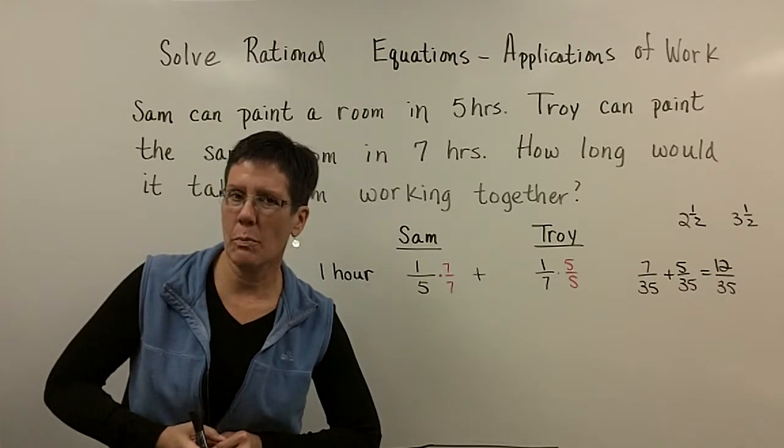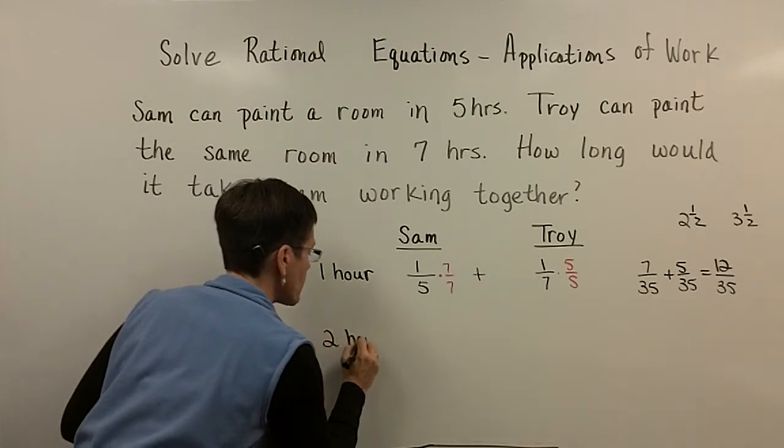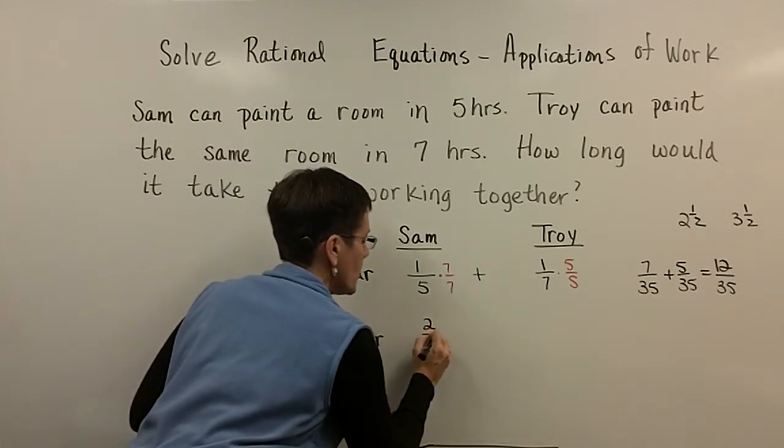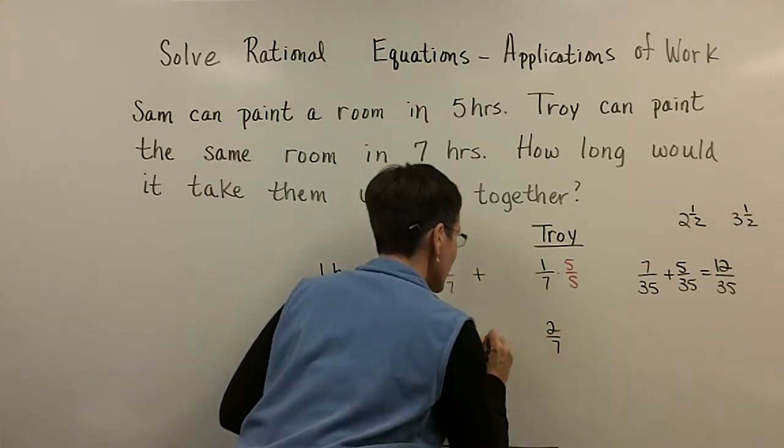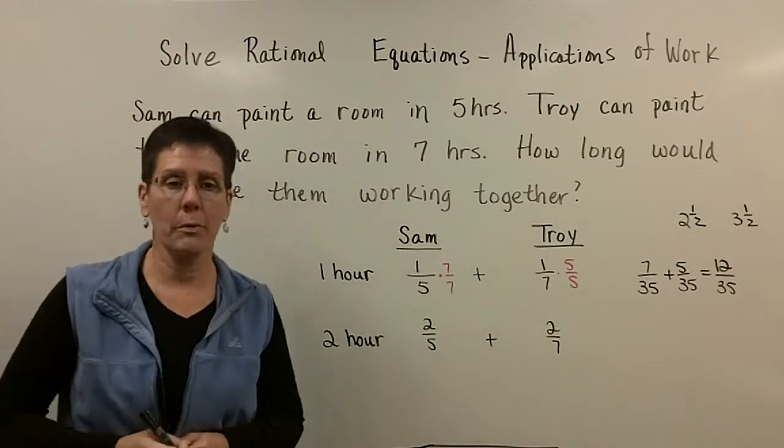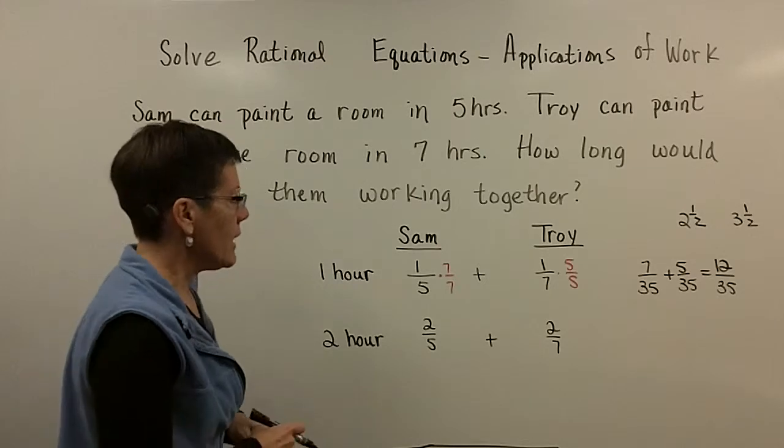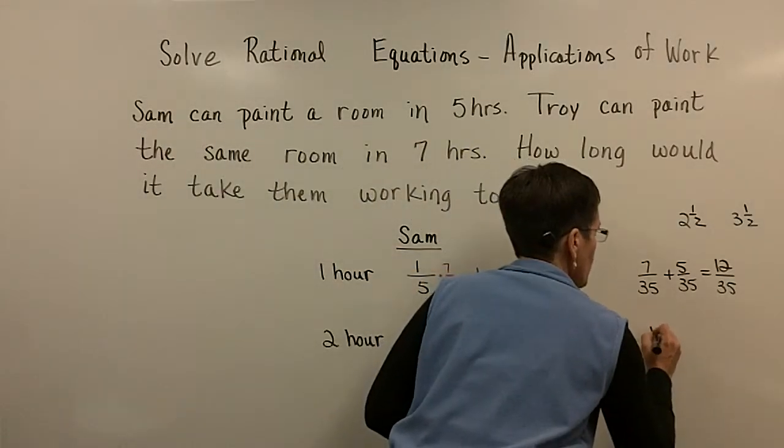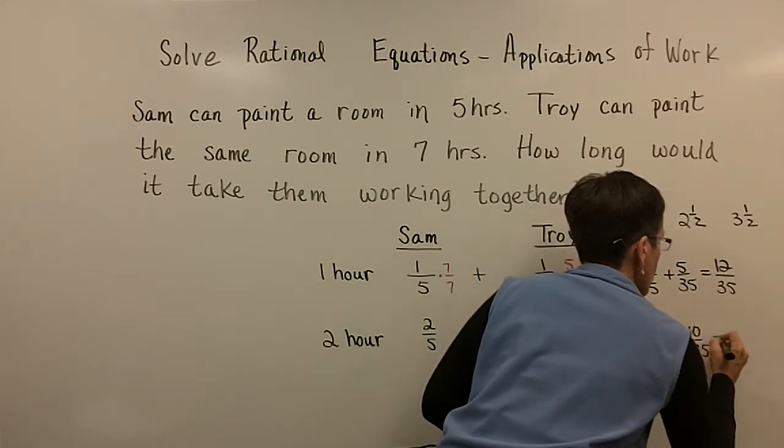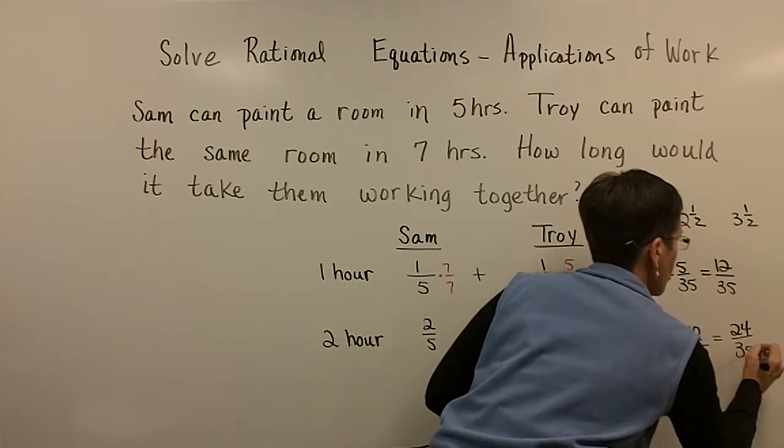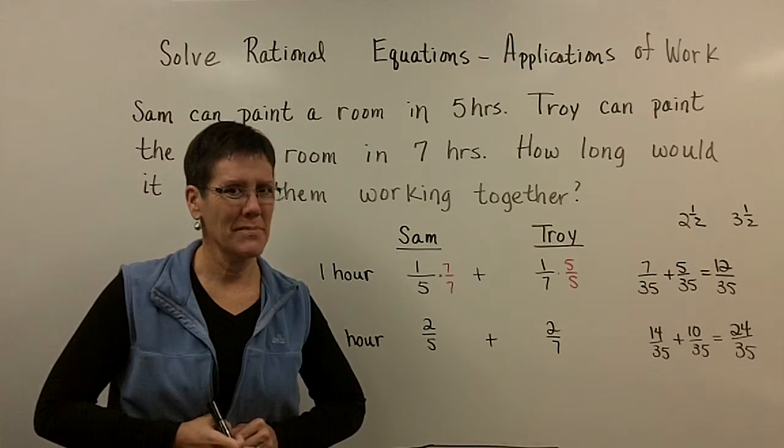I don't want twelve-thirty-fifths of the room painted, I want the whole room painted. So let's have them work for two hours. And so, wouldn't Sam get two-fifths of the room painted, and wouldn't Troy get two-sevenths of the room painted, in those two hours. So again, common denominator, thirty-five. And so, Sam will do fourteen-thirty-fifths, and Troy will do ten-thirty-fifths. And together now, they've done twenty-four thirty-fifths of the project. Not good enough for me. I want the whole job done.